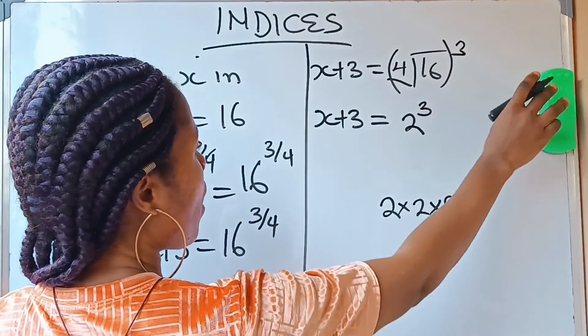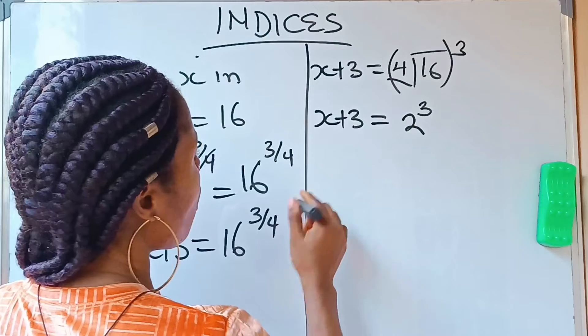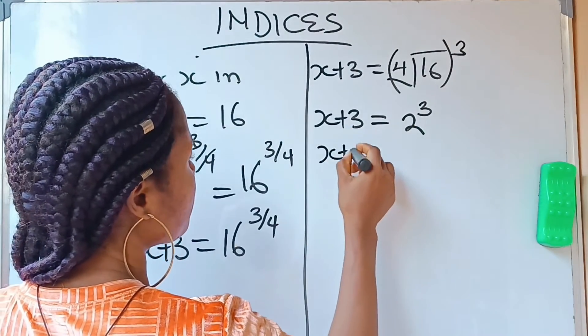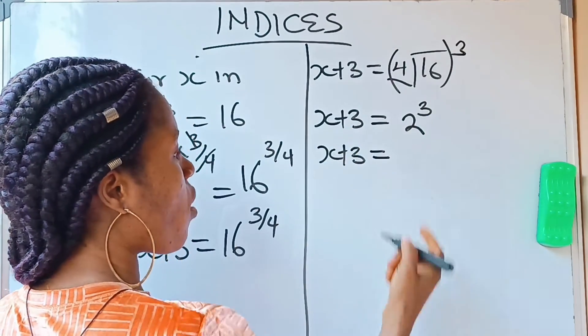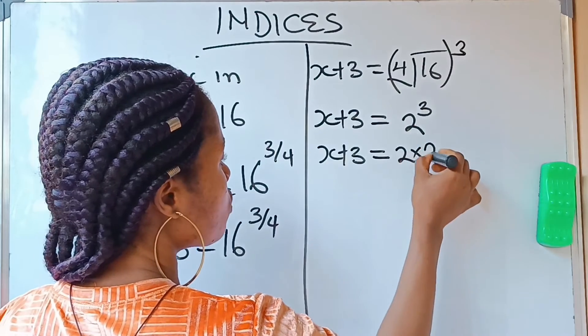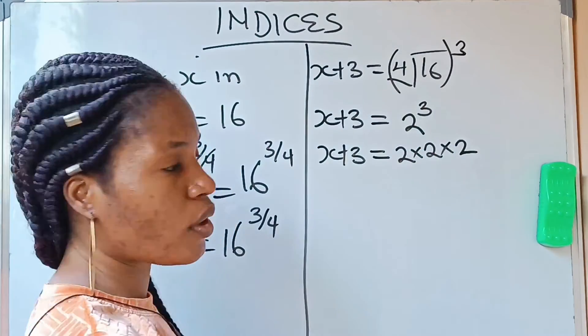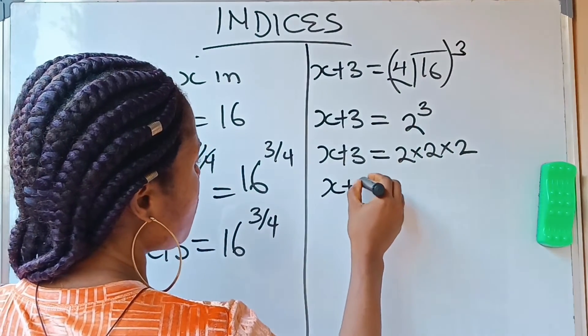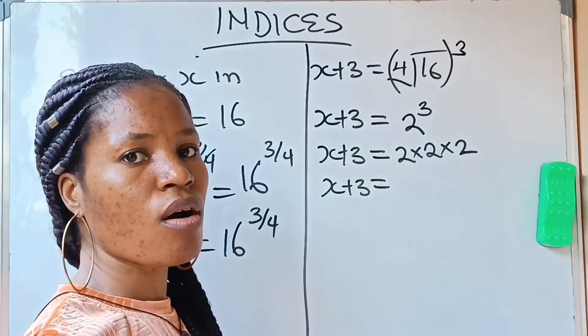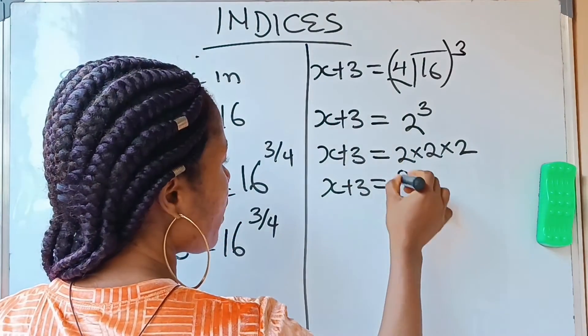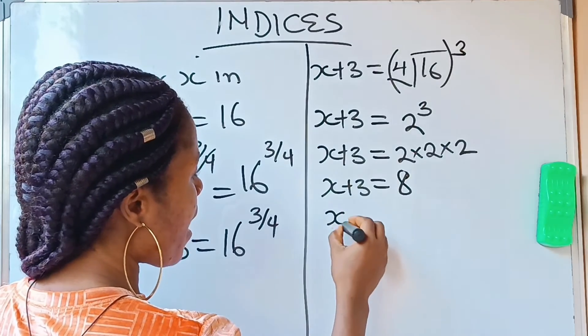We are going to have 2 raised to the power 3. Now x+3 equals 2 raised to the power 3, which is 2 times 2 times 2. You have x+3 equals 2 times 2 is 4, 4 times 2 is 8, so you have 8 here.